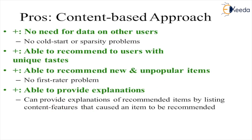The pros of the content-based approach: there is no need for data on other users, since the model works around a single user only. It is able to recommend items to users with a unique taste, and we don't need to depend on users who are not part of the system. It is also able to recommend new or unpopular items, and can provide explanations for why the user will like a particular item.